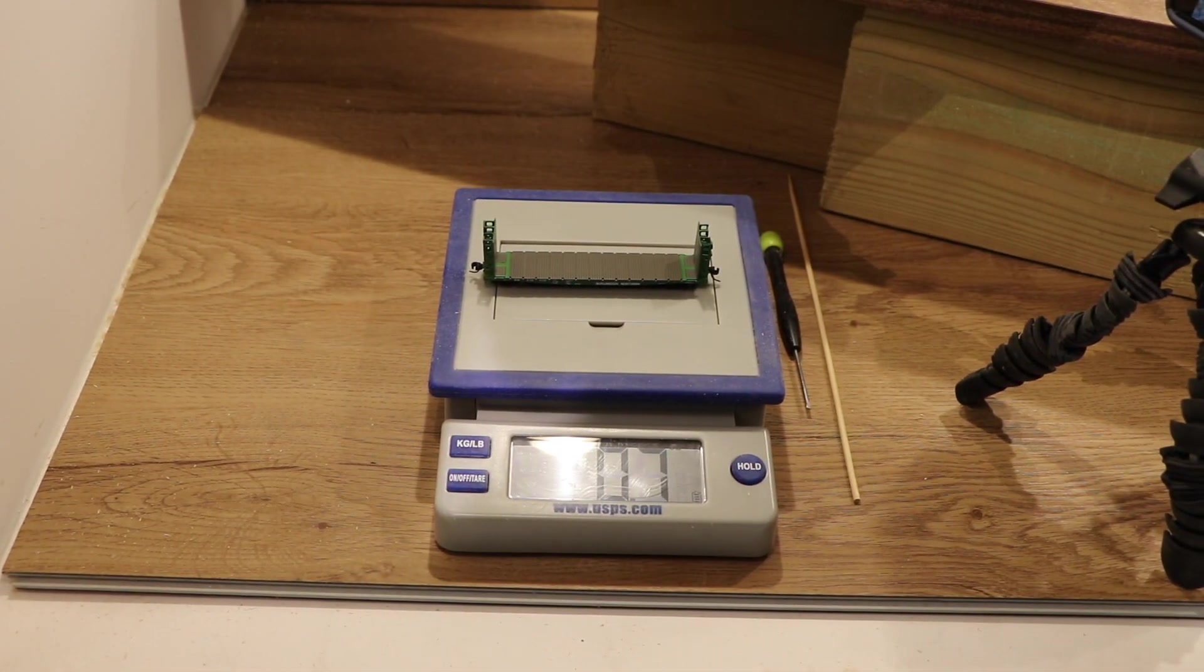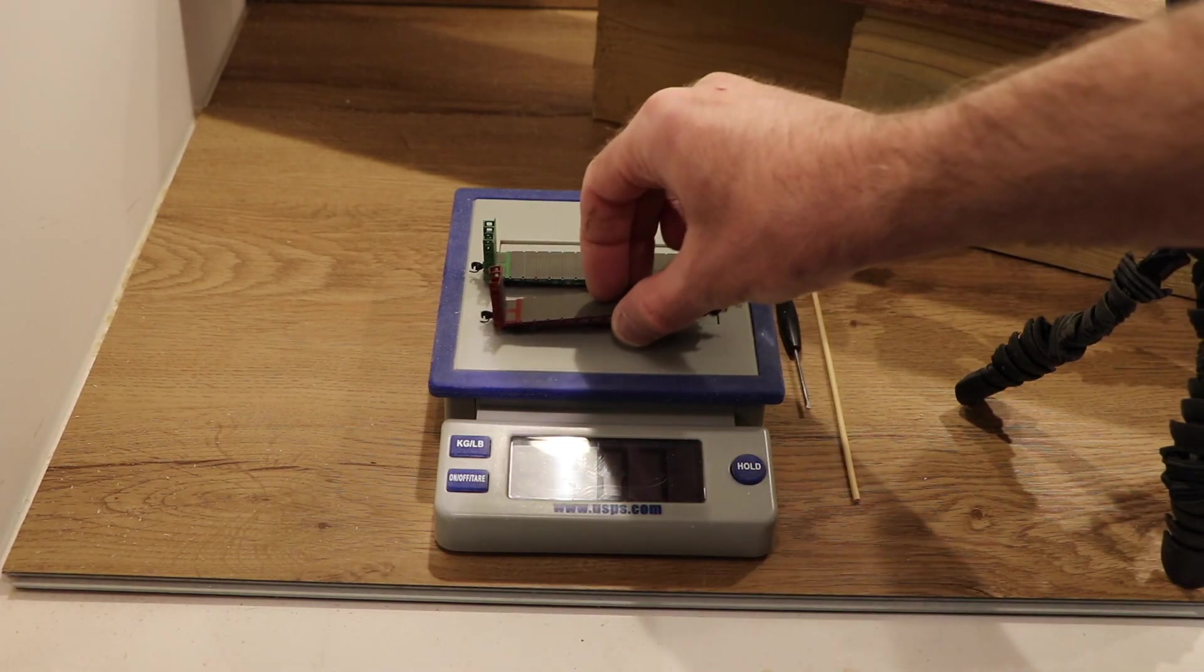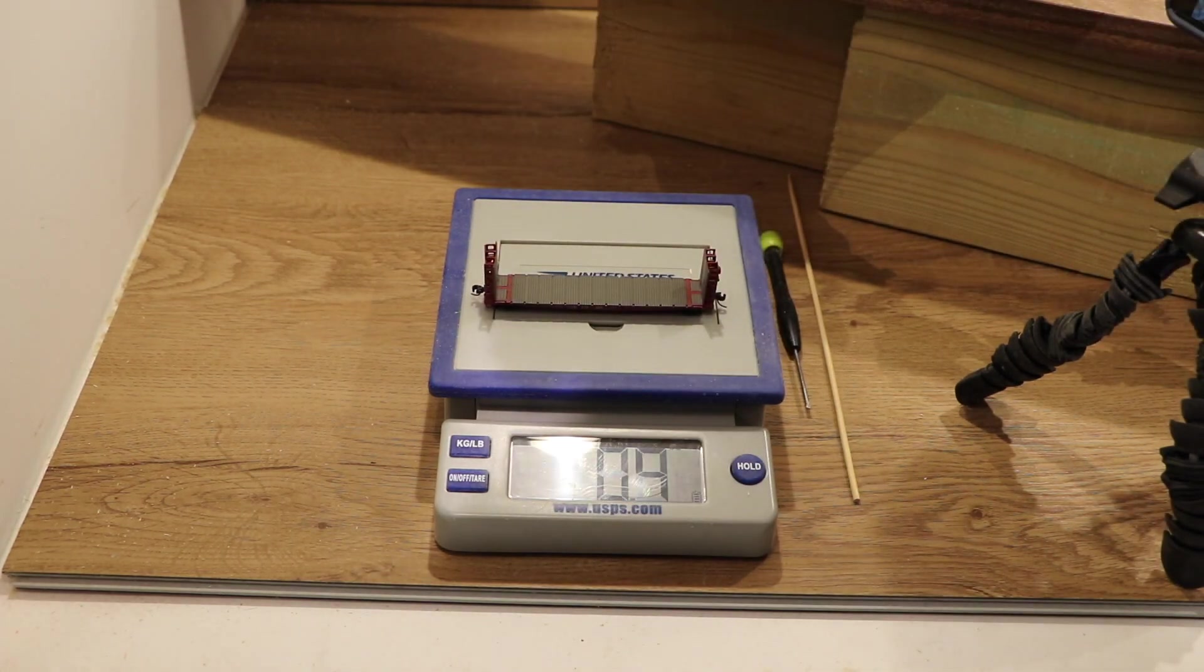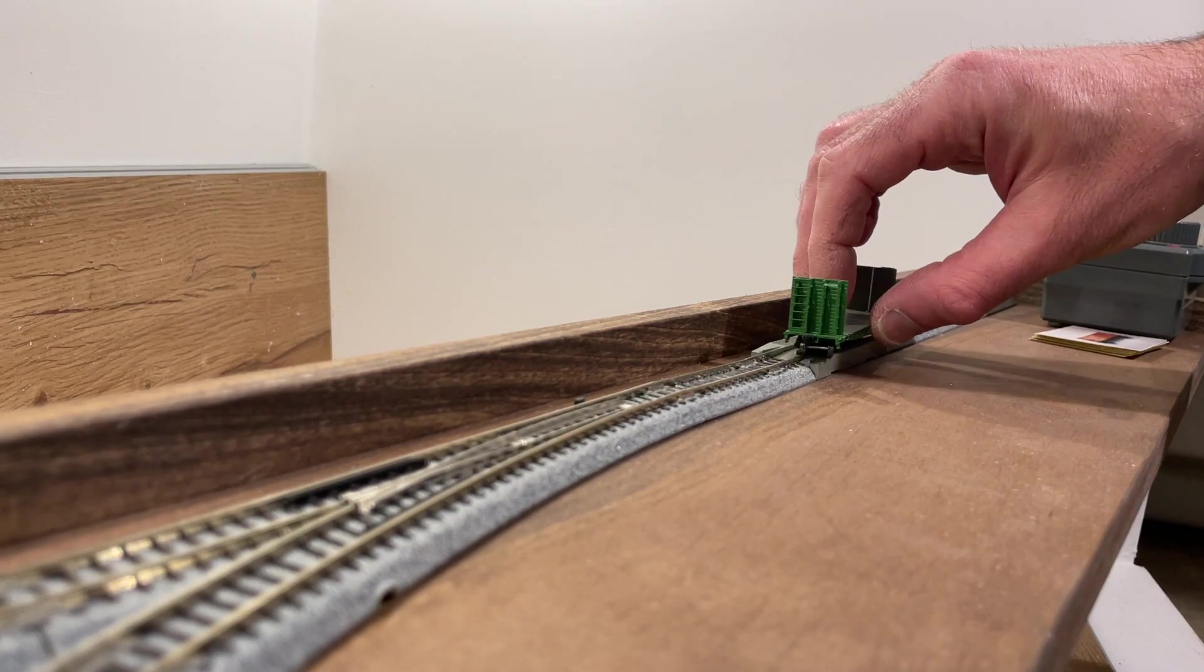These cars weigh in at 0.7 ounces, which isn't bad for a flat car in N-scale, but I still like to usually have most of my cars up closer to one ounce for optimal reliability when especially switching through turnouts.